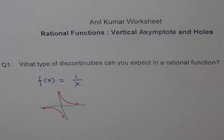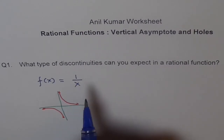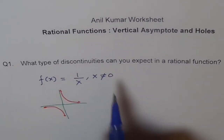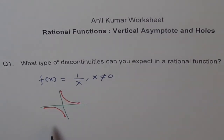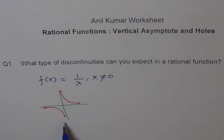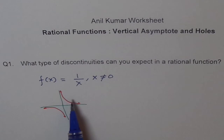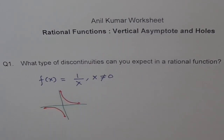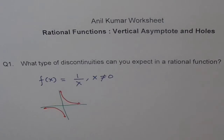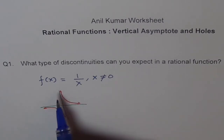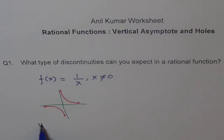We have a horizontal asymptote and a vertical asymptote. x cannot be equal to zero. As you approach zero from the negative side, you approach negative infinity — a very large negative value. And as you approach zero from the positive side, you approach positive infinity. So there is a discontinuity; you can never be at zero. This kind of discontinuity is called a vertical asymptote.